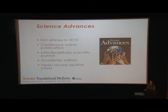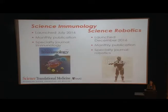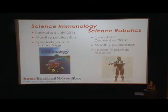The other journals we have: our only open access journal is Science Advances, started in 2015 with continuous online publication. This is also an interdisciplinary journal with a scope very similar to Science, so very broad. This is also run with academic editors, whereas the other journals have professional editors. Our two newest journals are Science Immunology, a specialty journal focused on immunology launched in 2016, and Science Robotics, also launched in 2016 with a focus on robotics.